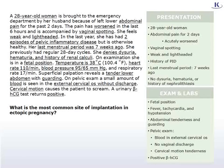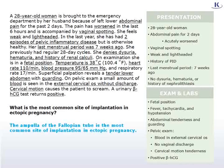Returning to our vignette, the patient's clinical presentation includes most of the signs and symptoms of an ectopic pregnancy, and it appears to have ruptured given her signs of shock and peritoneal irritation. The best course of management would be to resuscitate the patient using intravenous fluids and perform an emergency salpingectomy. The most common site of implantation in ectopic pregnancy is the ampulla of the fallopian tube.